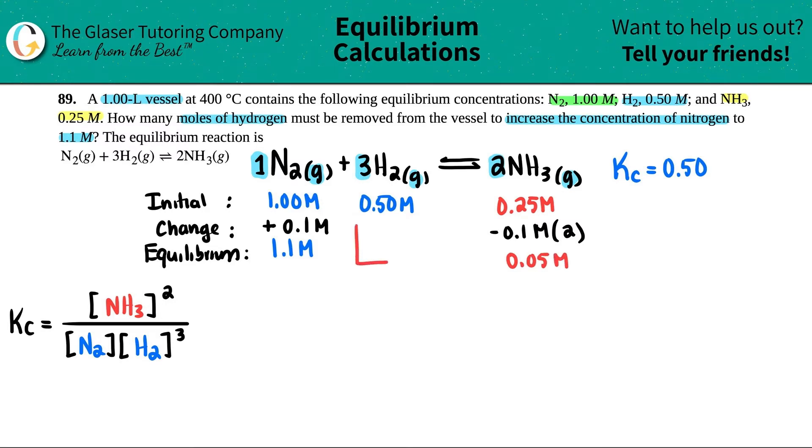Now, what we can do is we can actually do the same thing for the H2. But maybe we want to be a little bit more specific, especially since we know the Kc formula or the Kc value. So maybe let's just solve for H2. What is going to be the new H2 value? Let's plug it into our formula and solve for H2. So 0.50 equals the concentration of the new NH3, which is going to be 0.05 squared, divided by the N2 which is 1.1, and then times this by X, and we have to cube that.